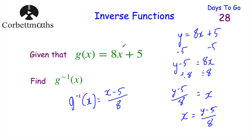Let's check: if x = 2, then 8 × 2 = 16, plus 5 = 21. Then 21 − 5 = 16, divided by 8 = 2. And that's it.